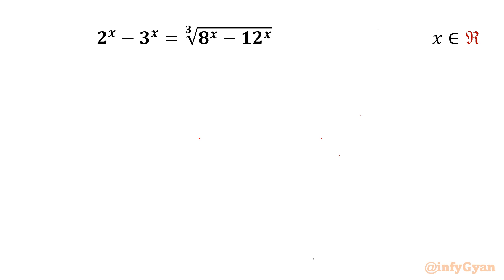Welcome back to Enfigyarn friends. Today in this video we are going to take up one very interesting challenge from exponential equations. The given equation is 2^x minus 3^x equal to the cube root of (8^x minus 12^x). We have to find out all real solutions. Let us get started by cubing both sides.